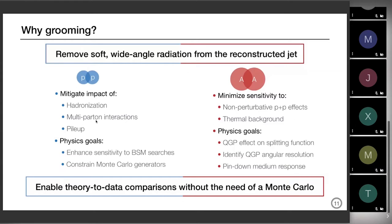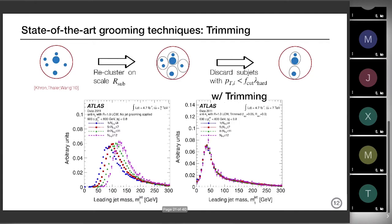The second option I proposed was to keep using the mass as a discriminator but a modified mass — not the plain mass, but removing some emissions that contaminate your determination of the mass. This is done by so-called grooming techniques: they remove soft and wide-angle radiation from the reconstructed jet. In proton-proton collisions we are trying to minimize the impact of all these contributions in order to enhance sensitivity to beyond-standard-model searches or constrain Monte Carlos. For the heavy ion side, on top of these non-perturbative effects we also have the thermal background, so we want to minimize sensitivity to that in order to understand what the QGP effect on the splitting function is, and identify the QGP angular resolution. At the end of the day what grooming techniques achieve is to enable theory-to-data comparisons in pQCD directly against data.